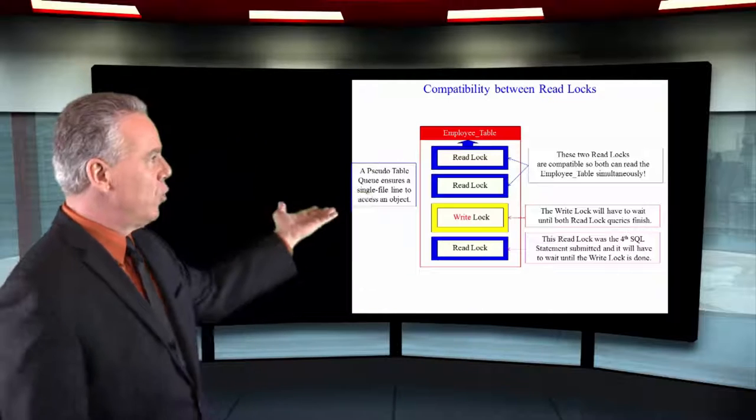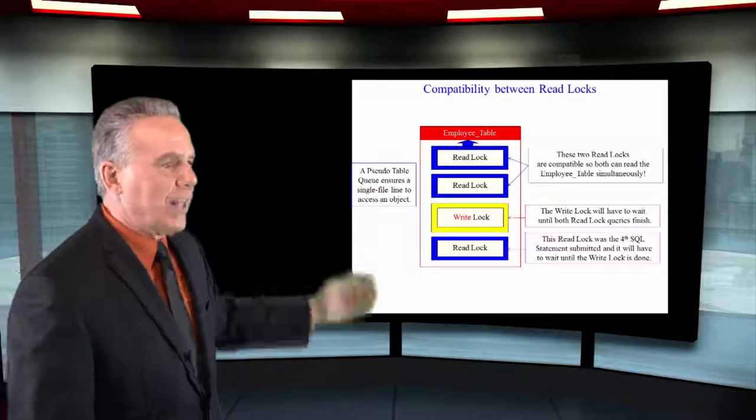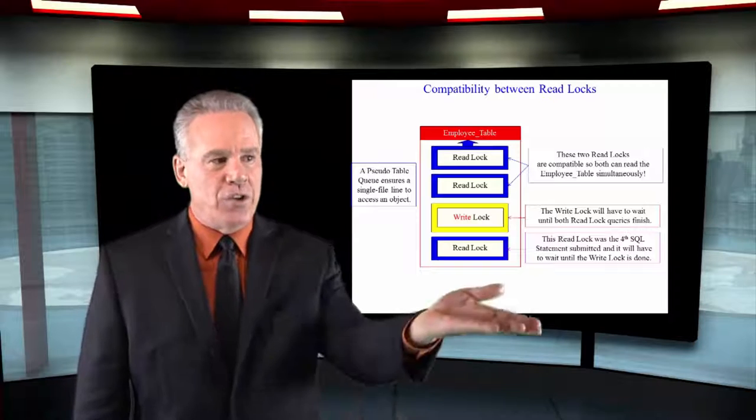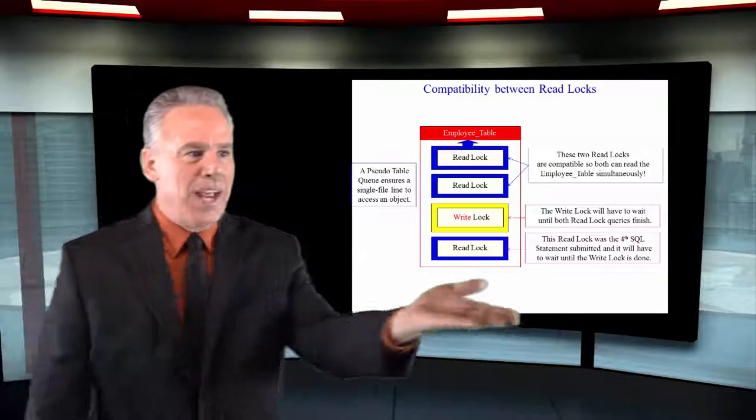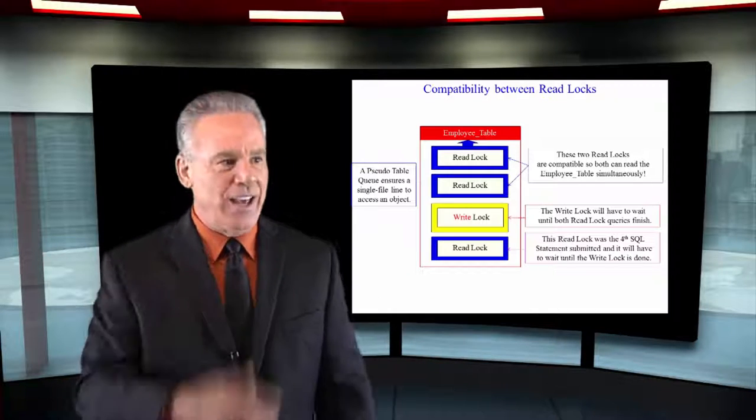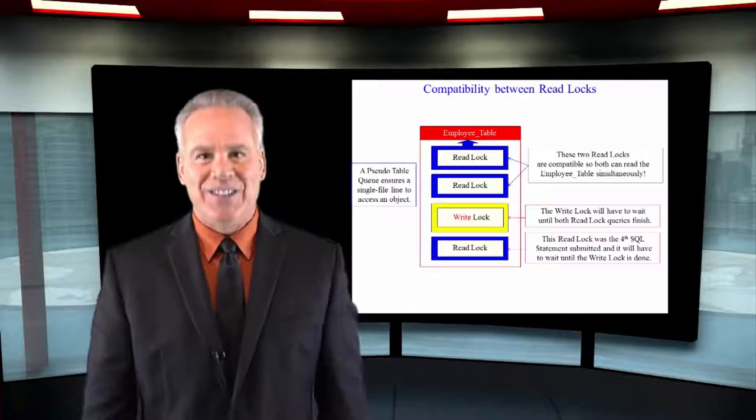So as you can see here, two read locks both move up. The write lock has to wait how long? Forever if it takes. But when the two read locks are done, the write lock moves up and the read lock behind it waits until it's done. And then and only then will the last read lock get its chance.